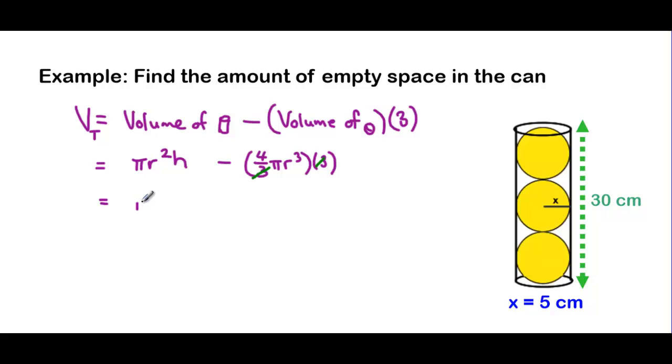So let me just finish off by writing this as πr²h subtract 4 times πr³. Where those two threes, one multiplying, one dividing, have cancelled out.